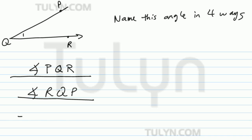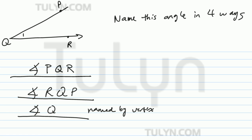You can also label it angle Q — just name it by its vertex. And you can also label it angle 1, because if you look closely, there's a little 1 there. Those are your four choices.